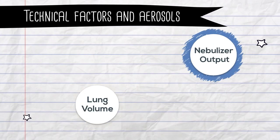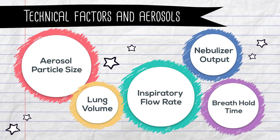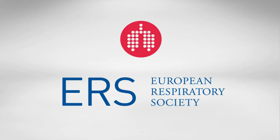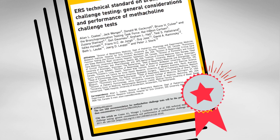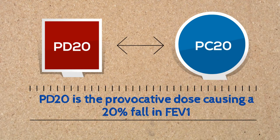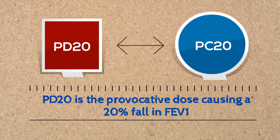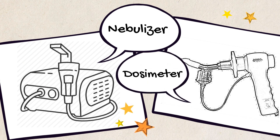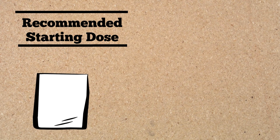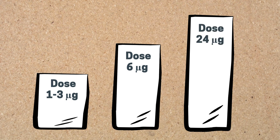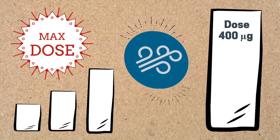Keep in mind the various technical factors and aerosols. ERS has recently updated the guidelines, suggesting that results be reported as PD20 rather than PC20. This allows comparable results from different devices such as nebulizers or dosimeters, as long as the delivery characteristics are known. The recommended starting dose is 1 to 3 micrograms, with subsequent steps doubled or quadrupled until a maximum dose of 400 micrograms is achieved.